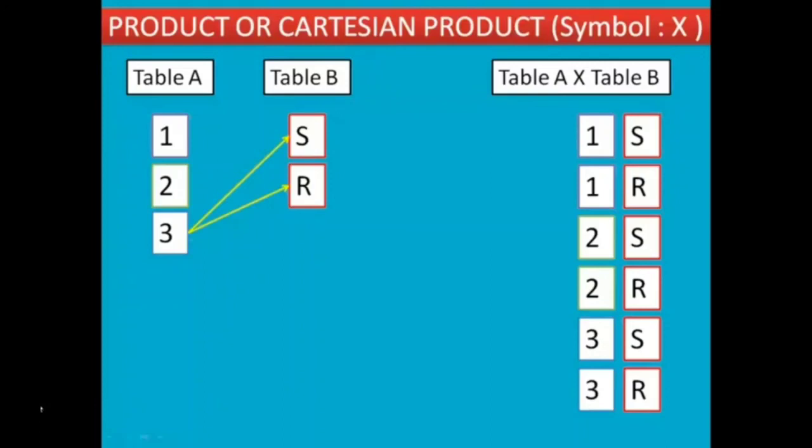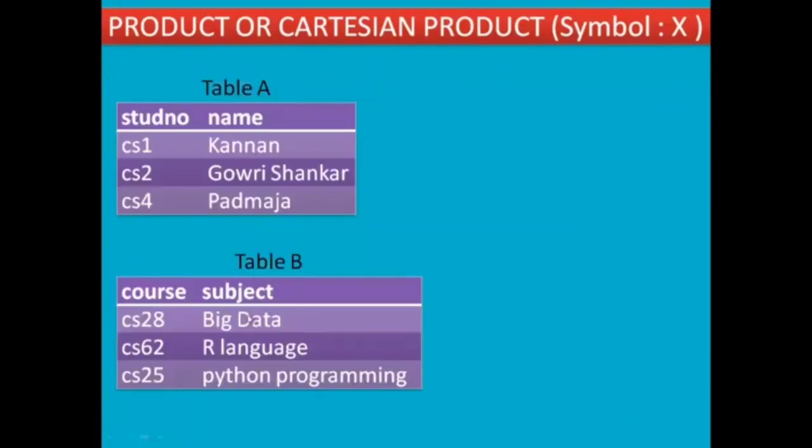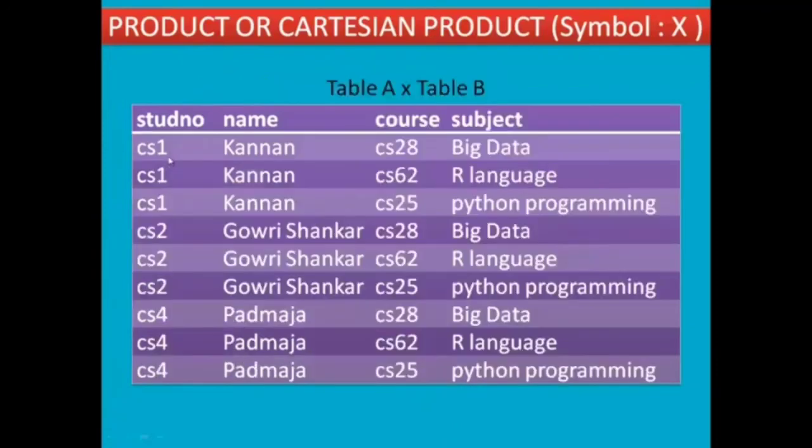You can merge two tables using Cartesian product. For example, table A has student number, name, and course; table B has subjects. Now we merge student number, name, course with subject. If you combine the two tables, we need to merge them. This is the Cartesian product. Thank you.